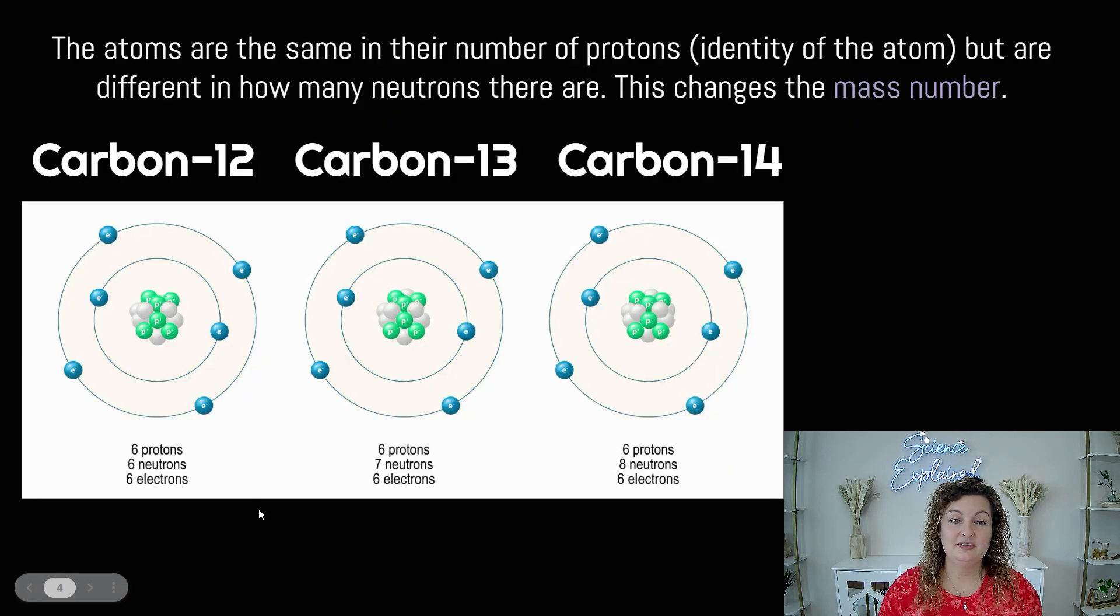So if we look at some of these here, we have carbon-12, carbon-13, and carbon-14. They are all named based off of their atomic mass, because if we change the number of neutrons, we are changing their atomic mass, and you can see that is the only thing that's changing here. So we have six protons, which identifies it as carbon,